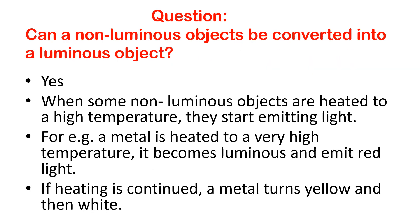You may think that can a non-luminous object be converted into a luminous object. Yes, we can. When some non-luminous objects are heated to a high temperature, they start emitting light. For example, a metal is heated to a very high temperature. It becomes luminous and emits red light. If heating is continued, the metal turns yellow and then white.